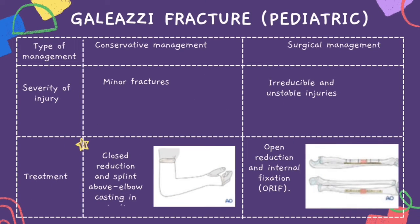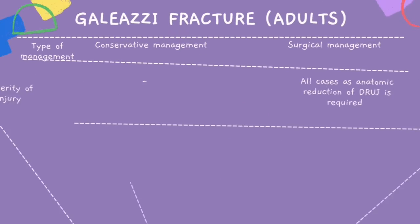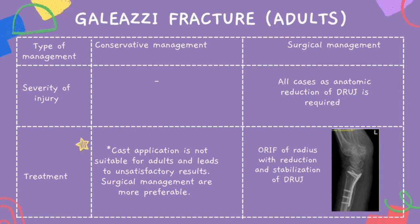For Galeazzi fracture in pediatric patients, conservative management for minor fractures uses closed reduction and above-elbow casting in supination. For surgical management with irreducible and unstable injuries, open reduction and internal fixation (ORIF) using plates and screws is used. For Galeazzi fracture in adults, conservative management such as casting is not suitable and leads to unsatisfactory results; surgical management is preferred. All cases require anatomic reduction of the DRUJ, treated with ORIF of the radius with reduction and stabilization of the DRUJ.